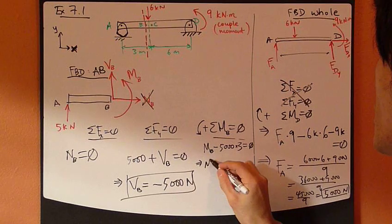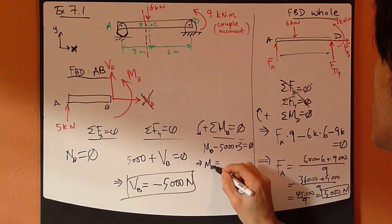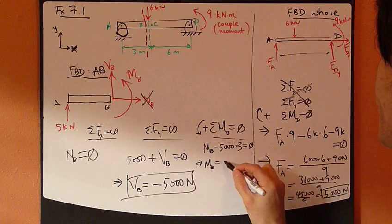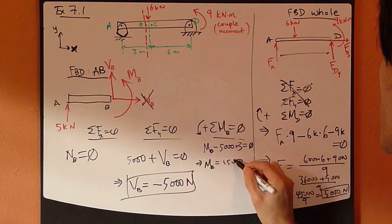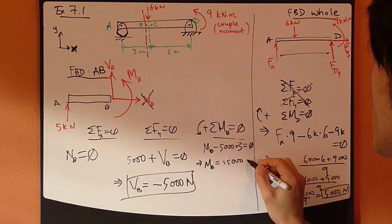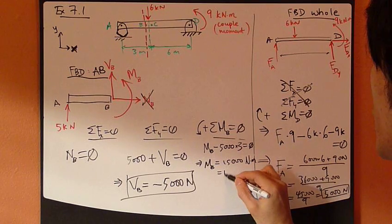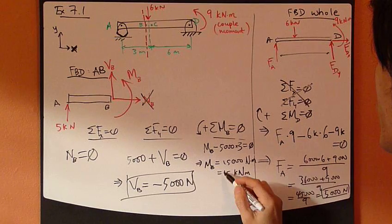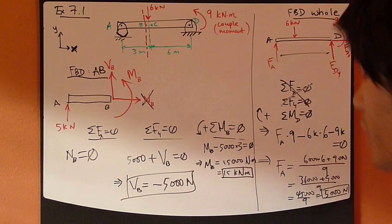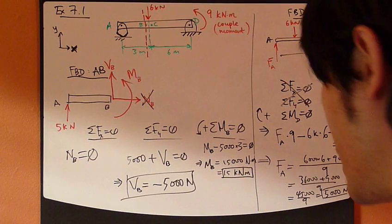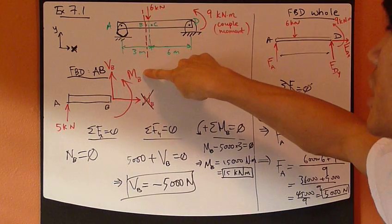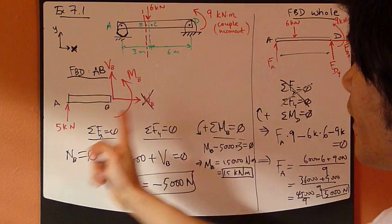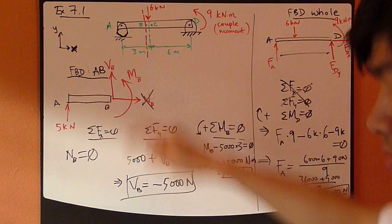Therefore, mb equals positive 15,000 newton meters, or 15 kilo newton meters. Positive means my originally assumed direction of counterclockwise is correct.